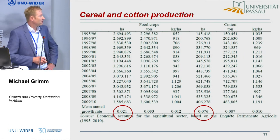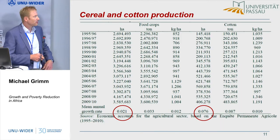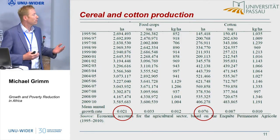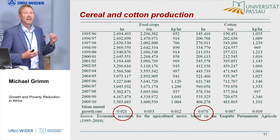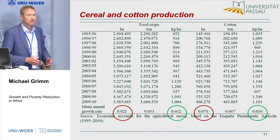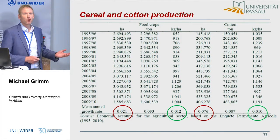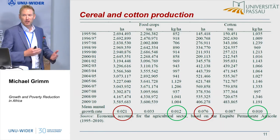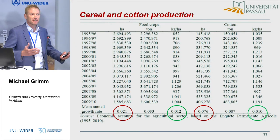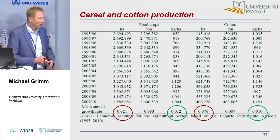Looking specifically at agriculture, separated into food crops and cotton: land use expanded massively — more than 2% per year for food crops and almost 8% for cotton. But yields only grew modestly — about 1.2% for food crops and 1% for cotton. That's the opposite of what you'd find during the Green Revolution in Indonesia, where productivity increased hugely. Here it's mainly land expansion, and land is limited, so this cannot be a sustainable source of economic growth.